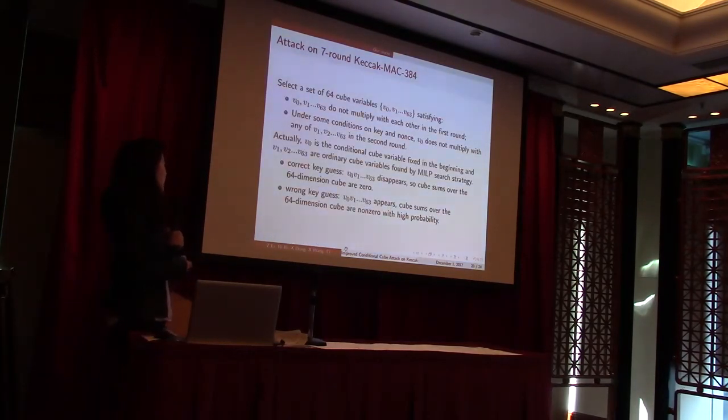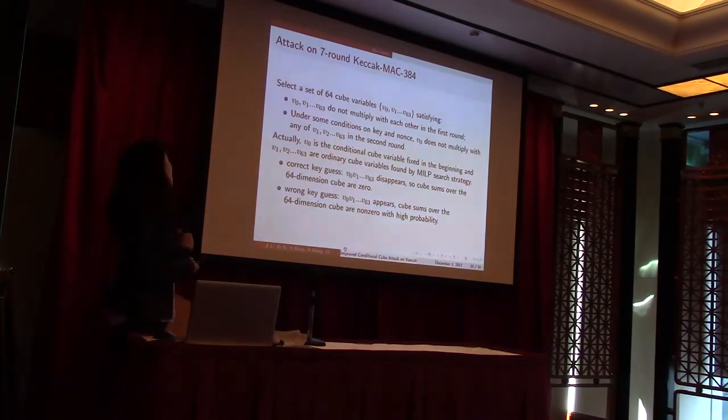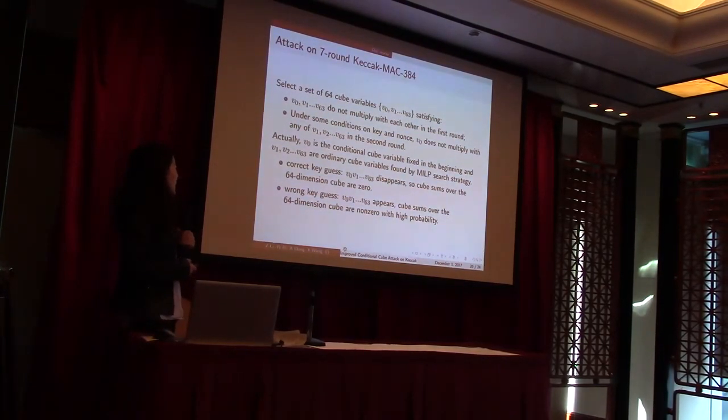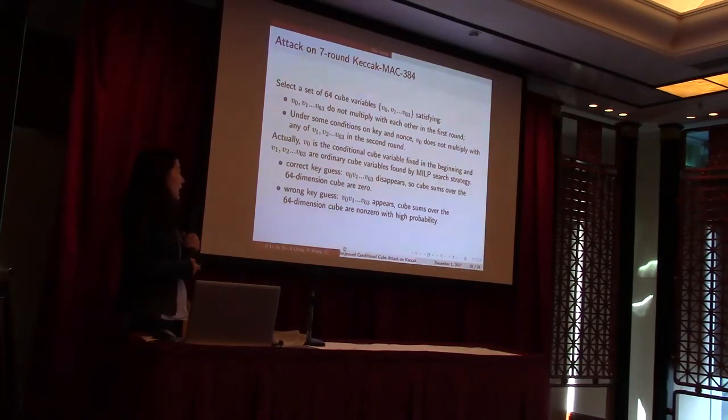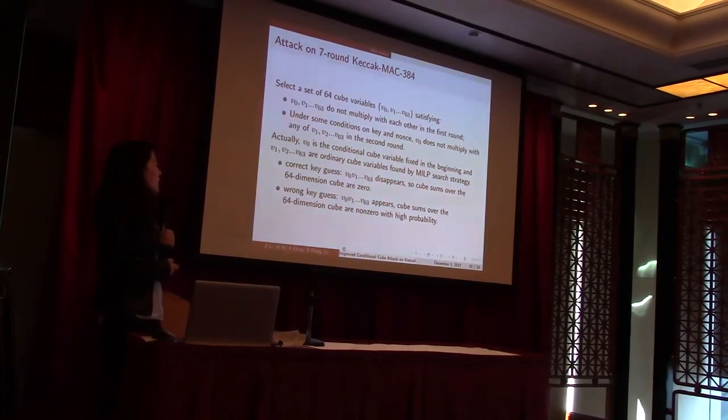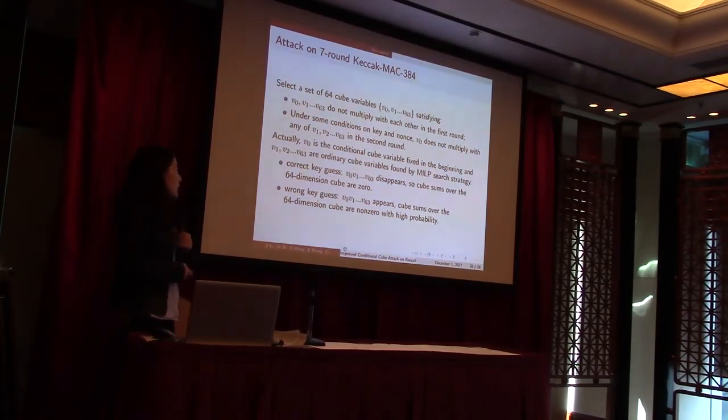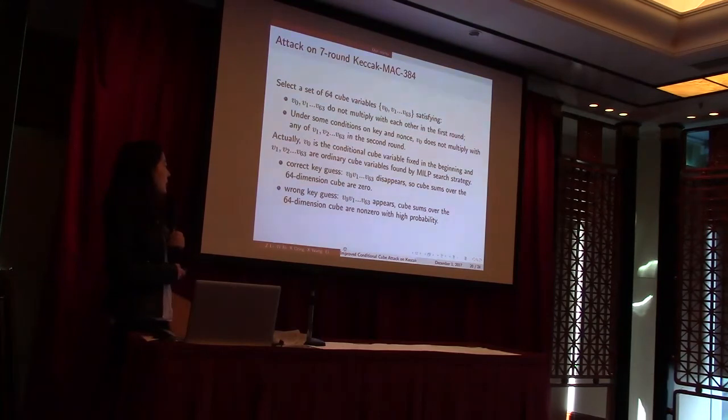At last, we can select 64 cube variables from V0 to V63. V0 is chosen at first in the beginning, and V1 to V63 are selected by our MILP search strategy. With the correct key guess, the product will disappear, so cube sum is zero. But with wrong key guess, the product appears, so the cube sum is not zero with high probability. Then the correct key can be selected.